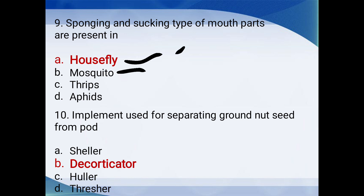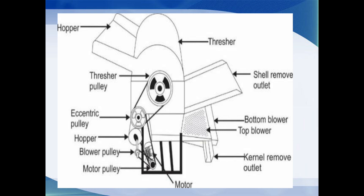Implement used for separating groundnut seed from pod: sheller, decorticator, huller, or thresher? The answer is decorticator. The decorticator has a hopper where feed is given, a thresher unit separates the kernels, and a blower separates the shells — so kernels come out separated from the pods.